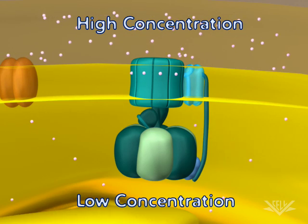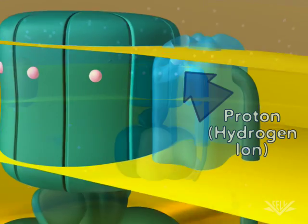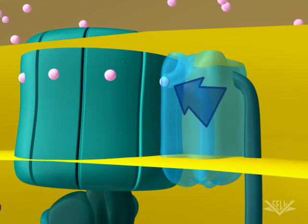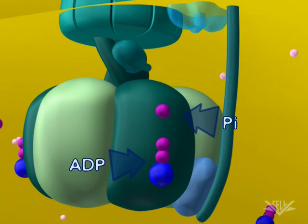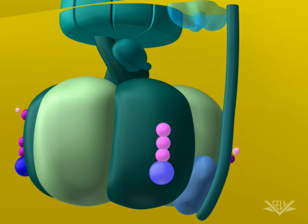Protons flow from the area of high concentration through the ATP synthase to the area of low concentration. As they flow through ATP synthase, ATP is produced.